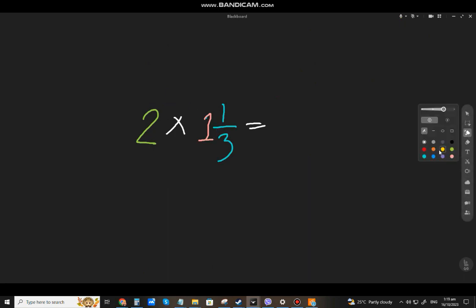What you do is, that whole number, will become like this. You'll put over 1. So, you didn't change the value. You just changed how it looks. Then, we'll multiply it by 1 and 1 third. Convert it to improper first.